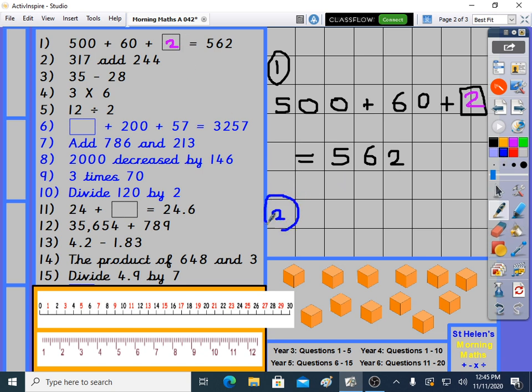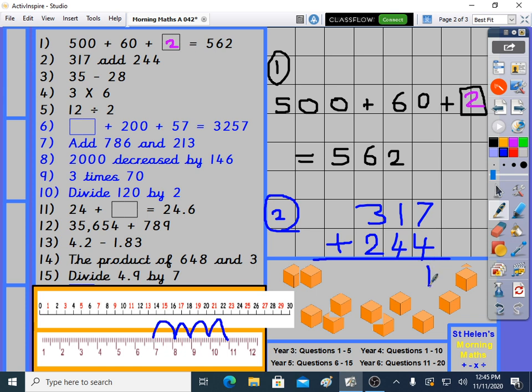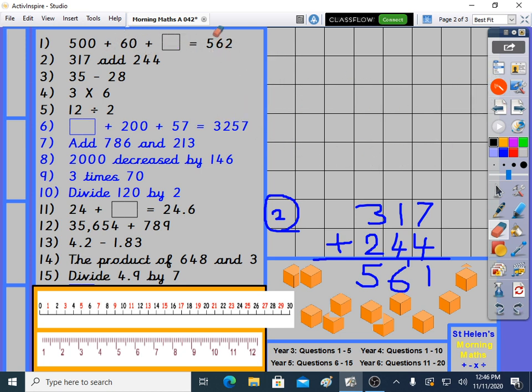Question 2: 317 add, is plus, 244. I'm going to need to move some of those cubes. Let's add this with our column method. 7 plus 4, 7 plus 1 2 3 4 is 11. 1 plus 4 plus 1, 1 plus 1 2 3 4 plus another 1, all that is 6. And there are 3, then we have 3 plus 2, 3 plus 1 2 is 5. 561. Remembering plus makes things bigger so the answer is bigger than the 317 that we started with, so that makes sense.